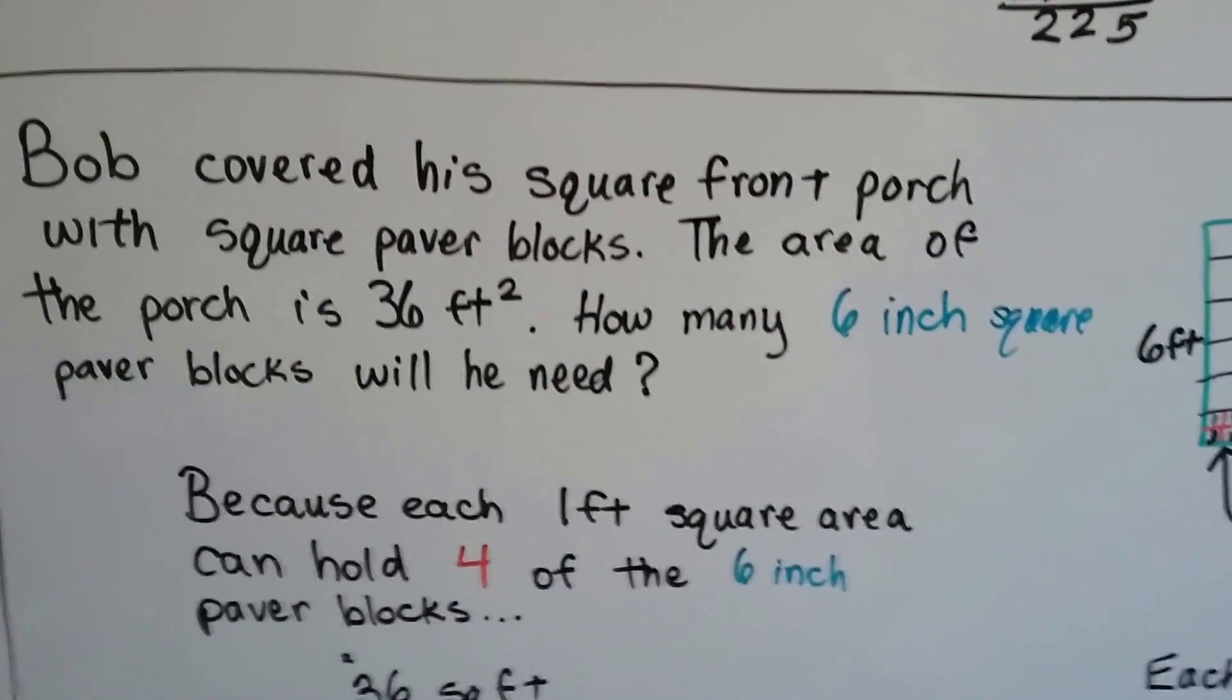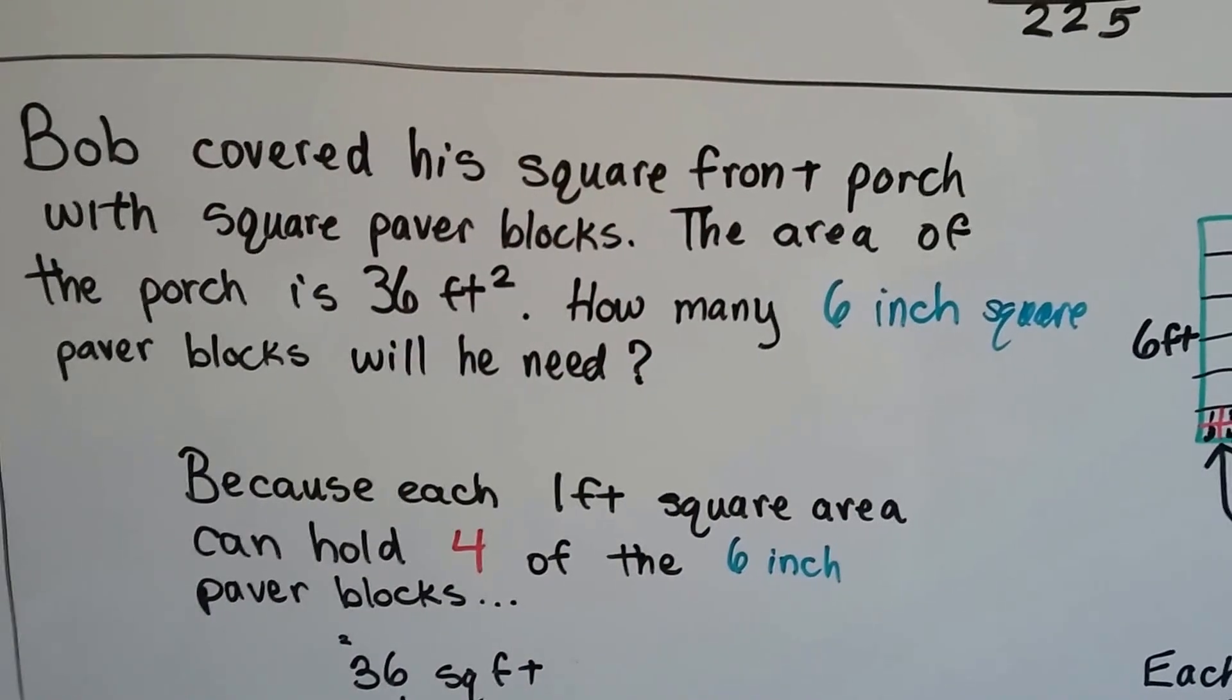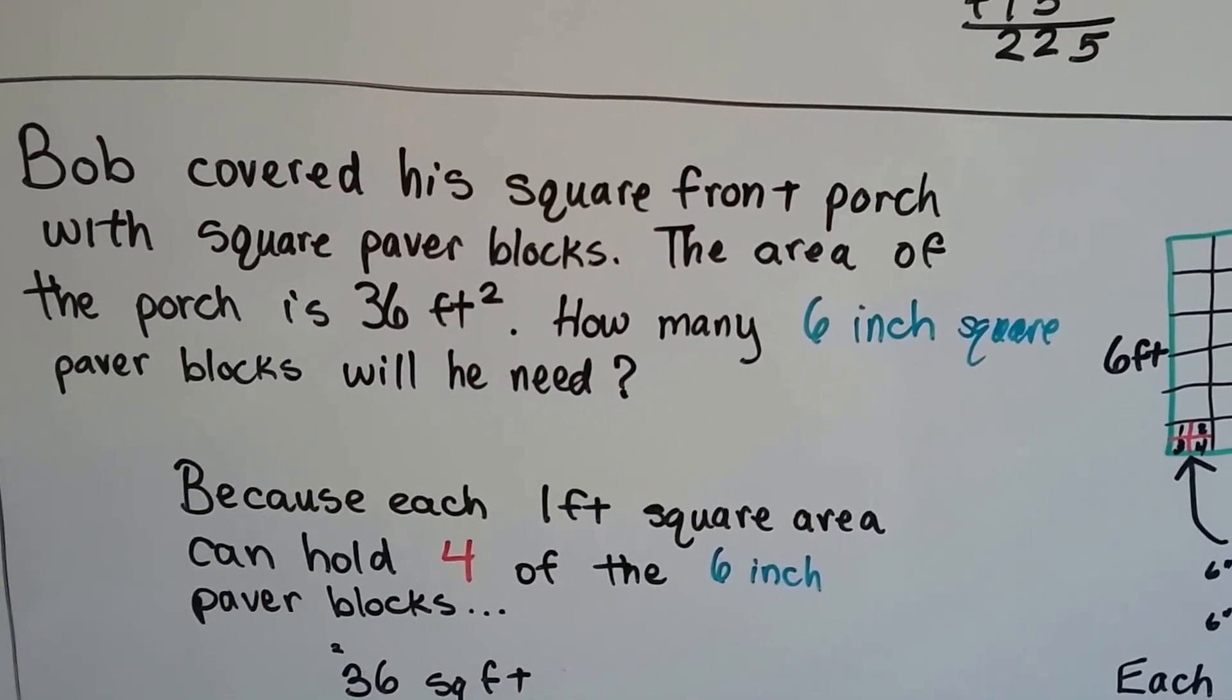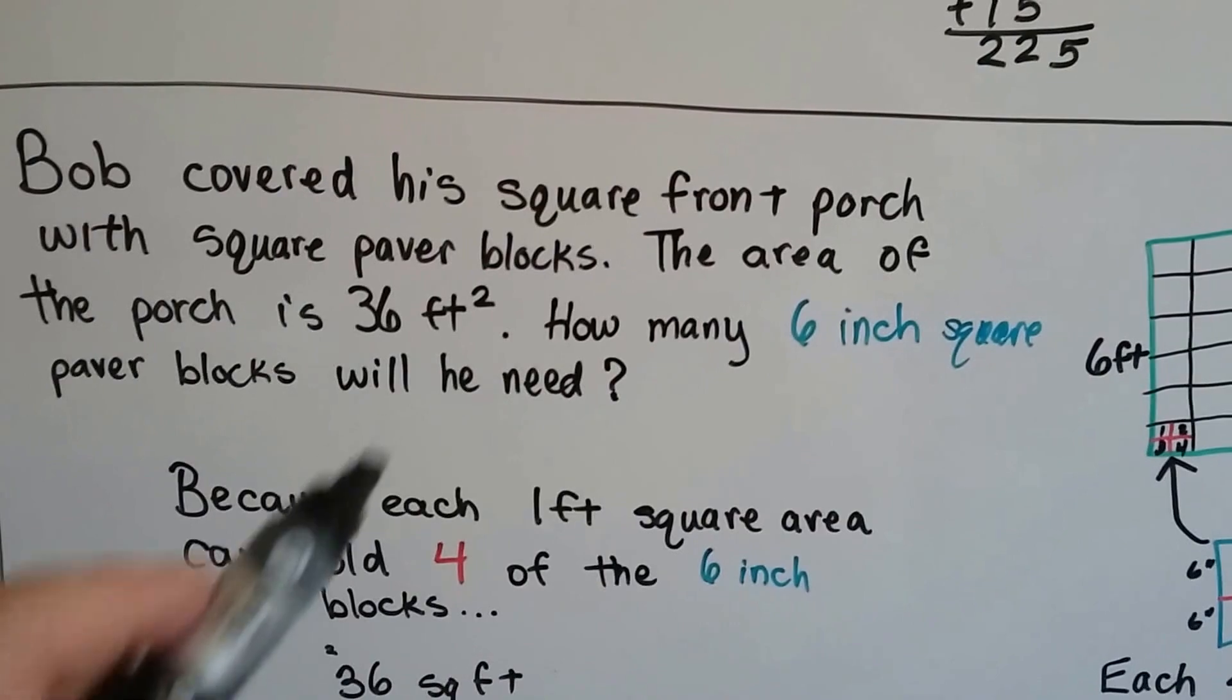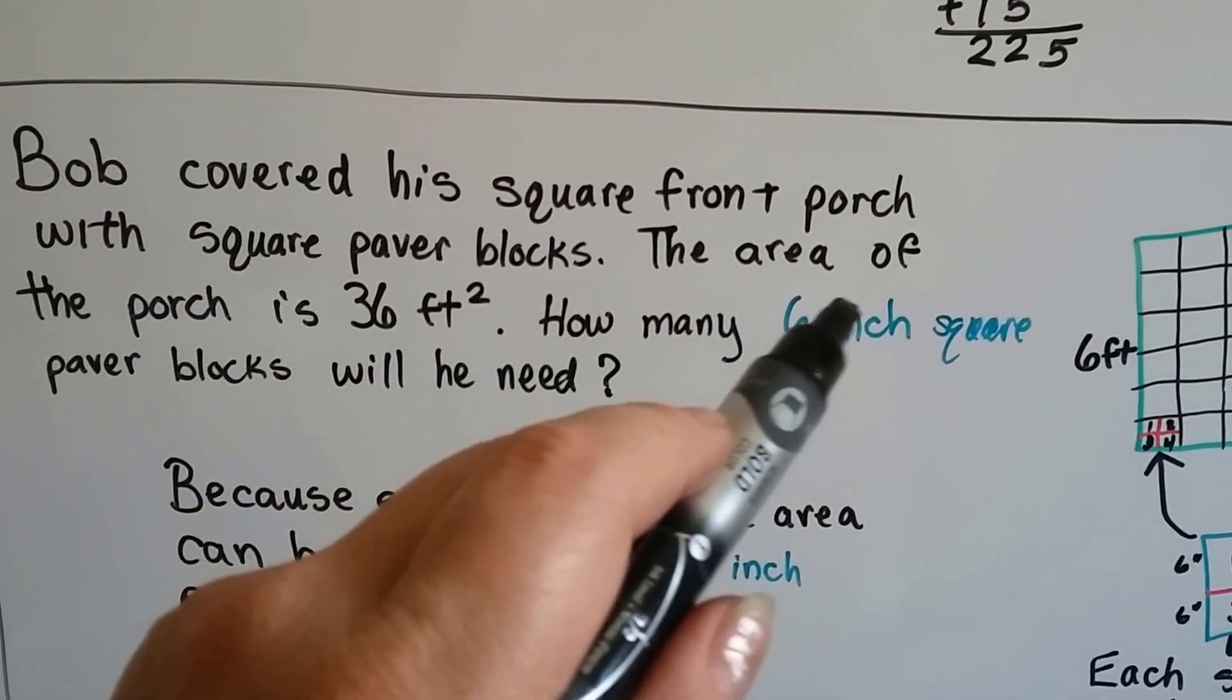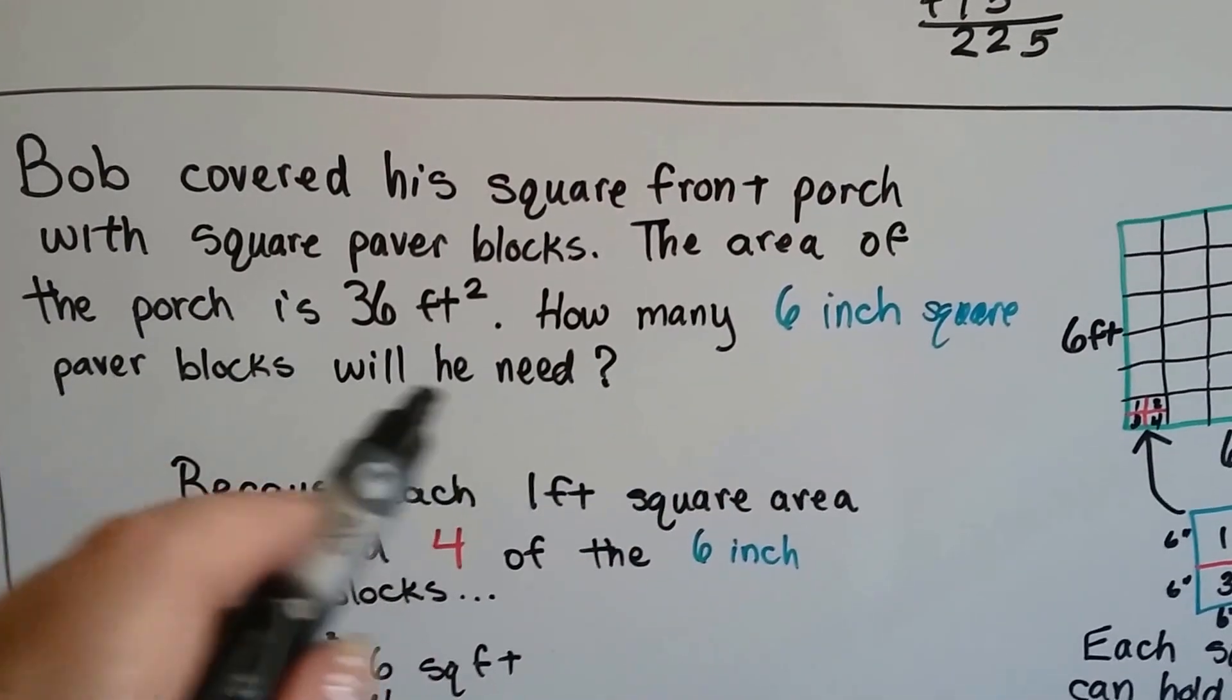So how about this problem? Bob covered his square front porch with square paper blocks. The area of the porch is 36 foot squared. So how many 6 inch square paper blocks will he need?